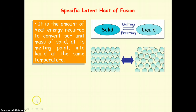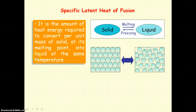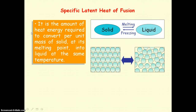When the solid is changing into a liquid we are dealing with the specific latent heat of fusion. This is the amount of heat energy required to convert per unit mass of solid at its melting point into liquid at the same temperature. So if we change 1 kg of solid into liquid at the melting point, the specific latent heat of fusion tells us how much heat energy is needed.